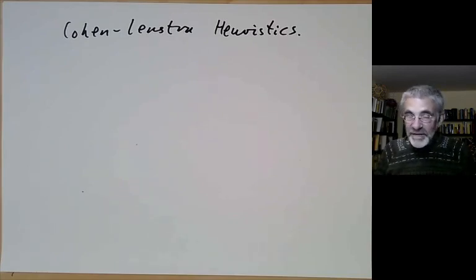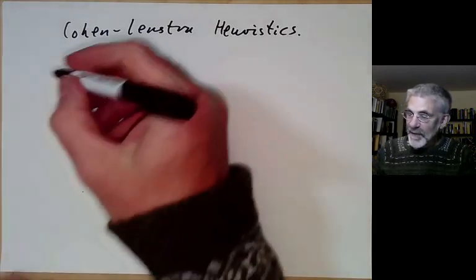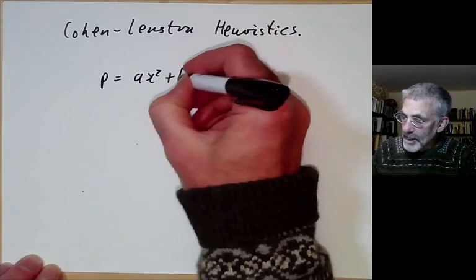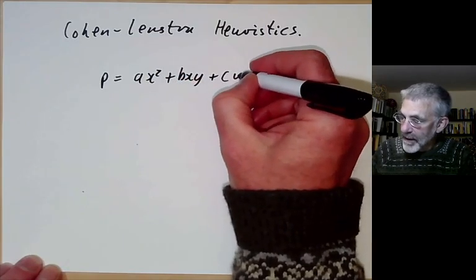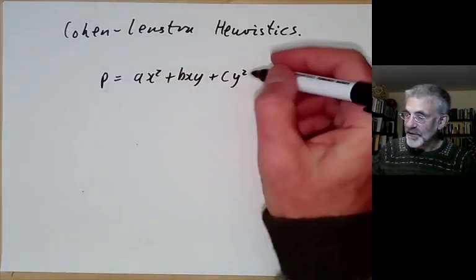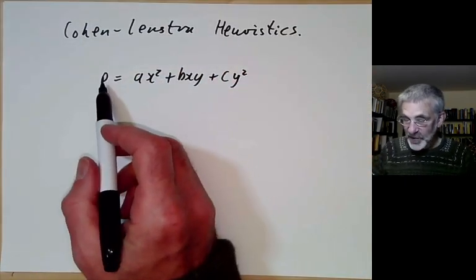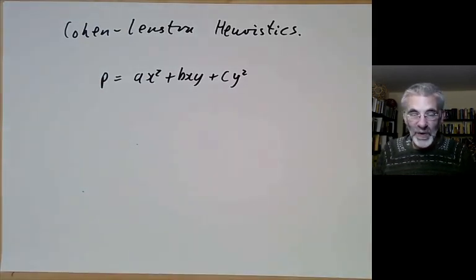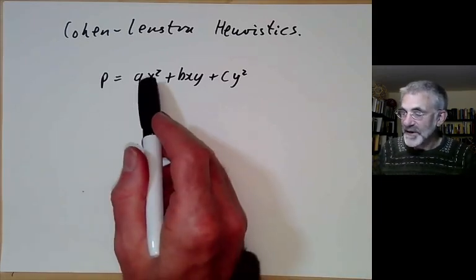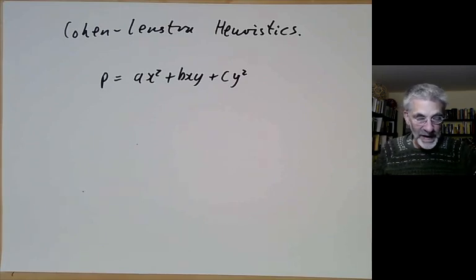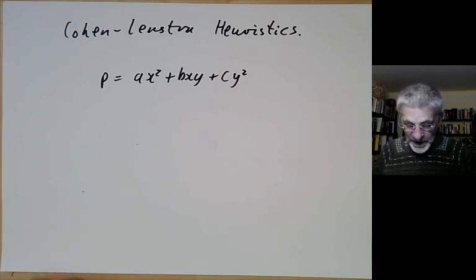So far we've been discussing when a prime can be written as a value of a form. You can ask more generally what happens if you try representing an arbitrary number that isn't a prime. We're going to discuss this next lecture, and for simplicity we'll just do the form x² + y² to illustrate what goes on.